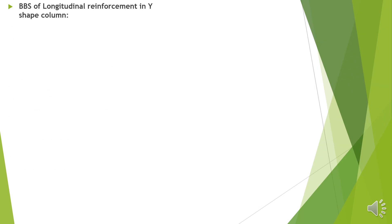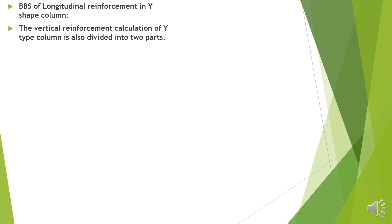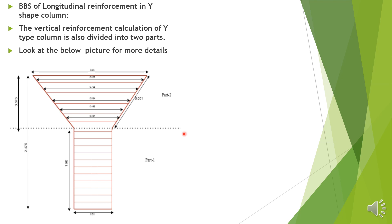Barbending schedule of the longitudinal reinforcement in Y-shaped column — that is, the ties or stirrups. The vertical reinforcement calculation of the Y-type column is also divided into two parts. Part one is the vertical portion with 1.9 meters; part two is the inclined portion with 0.876 running meters, making a total of 2.875 running meters. The ties are calculated at a rate of 100 mm center to center, and I have given every distance of each tie.